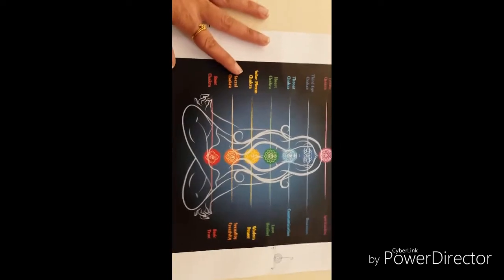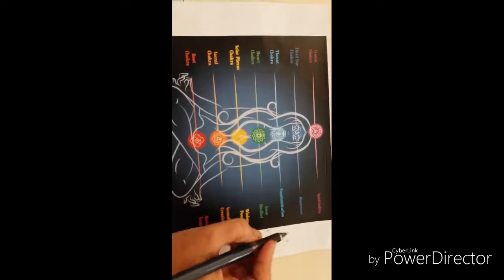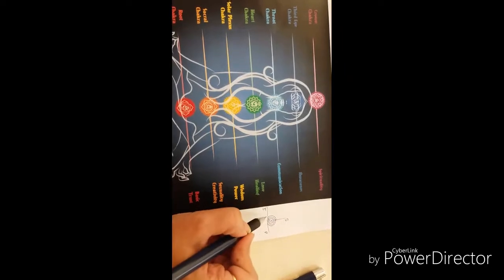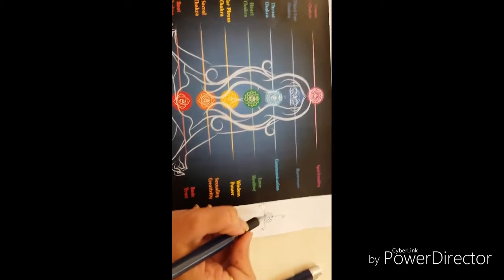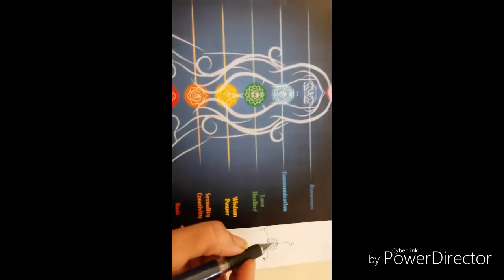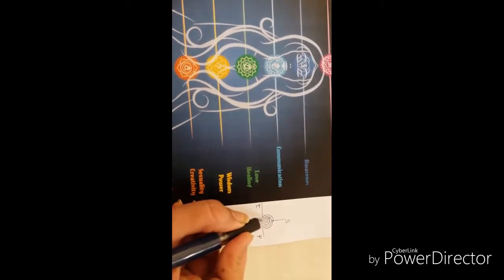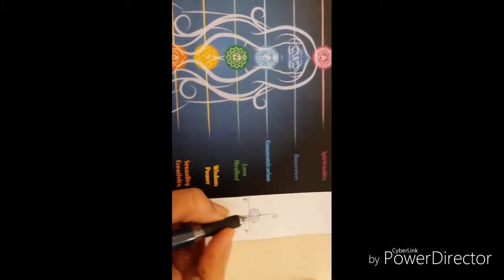Out of which, the three major vessels are Ida, Pingala, and Sushumna. It is said that wherever these three meet, there forms a whirl. For example, wherever rivers meet, there forms a whirl. This whirl seems like a wheel, so it is named as chakra.